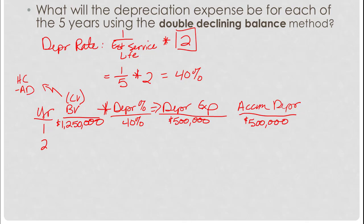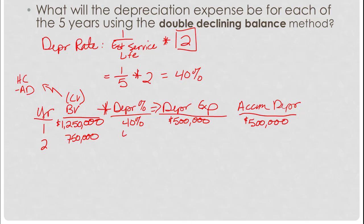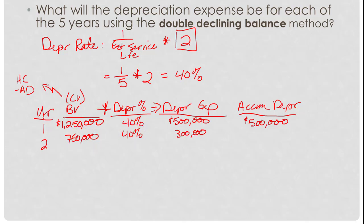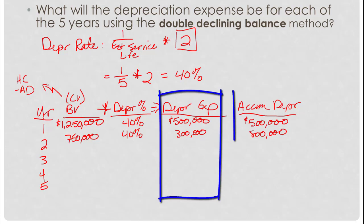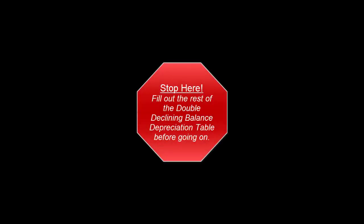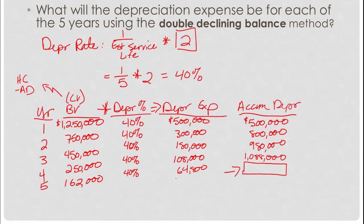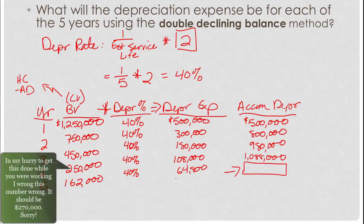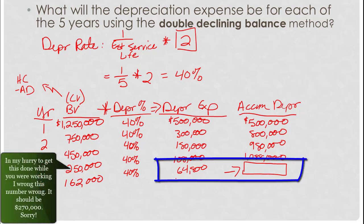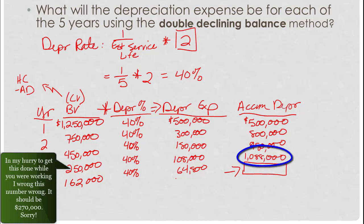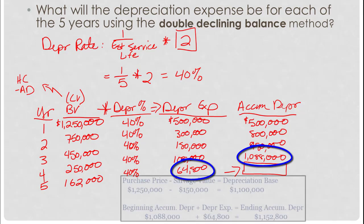In year two, the new book value is $1,250,000 minus $500,000 accumulated depreciation = $750,000. $750,000 times 40% gives $300,000 depreciation expense, and accumulated depreciation is now $800,000. Go ahead and finish this table for the remaining three years to get the depreciation expense and accumulated depreciation for each year.